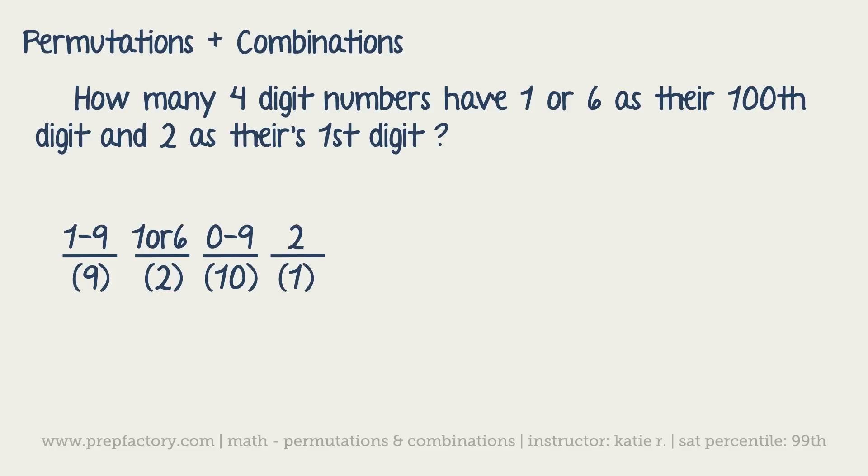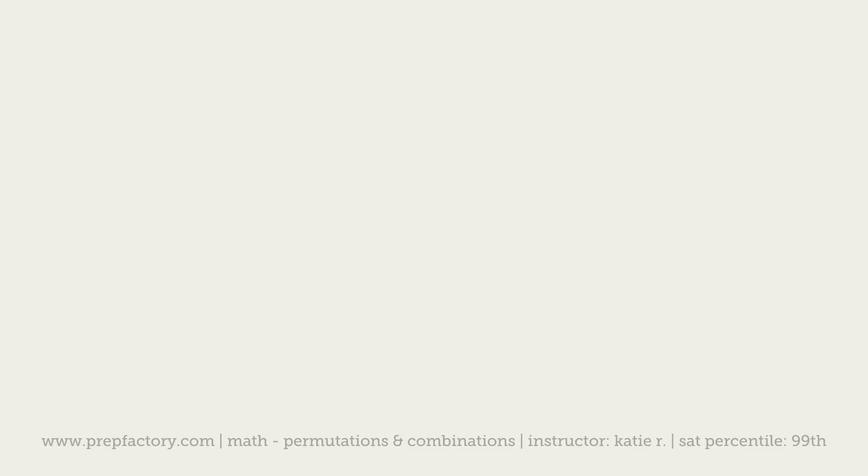Now you've had everything nicely set up. All you have to do is just multiply the bottom row, so you just say nine times two times ten times one. That would give you 180. So anytime you're just ordering things, all you have to do is draw out the number of slots that you have, put the options on top and the number of options on the bottom, multiply the bottom row.